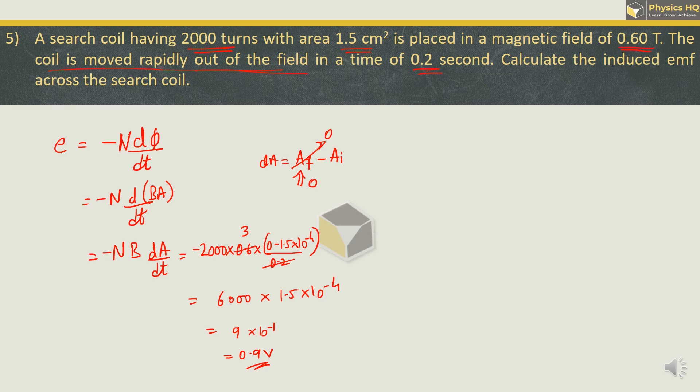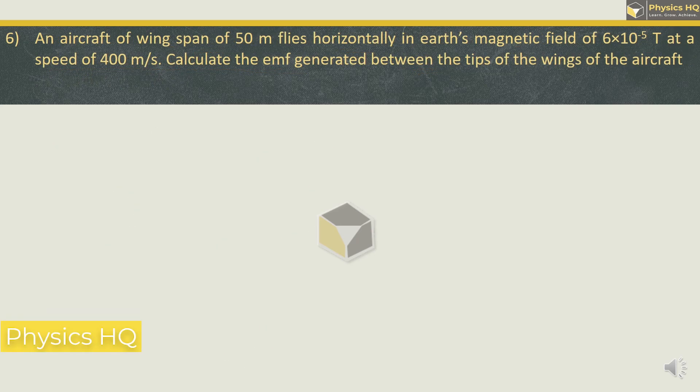Hope you all understood this. Let us check out the next problem. An aircraft of wingspan 50 meter flies horizontally in the earth's magnetic field of 6 into 10 raise to minus 5 tesla at a speed of 400 meter per second. Calculate the EMF generated between the tips of the wings of the aircraft.